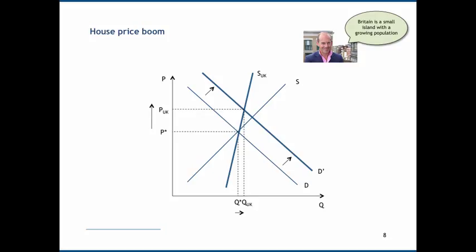We've left the original supply curve on the diagram so that you can compare and realize that it's because of that inelasticity of supply that the demand shock is primarily affecting prices and bidding up the price of existing housing stock, rather than causing an increase in houses being built.